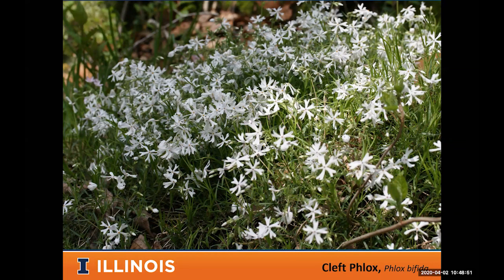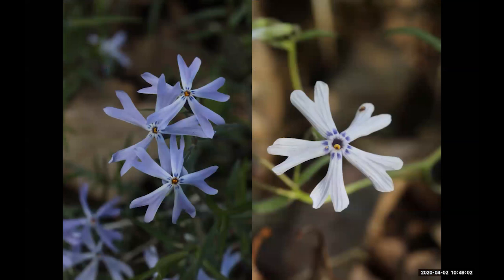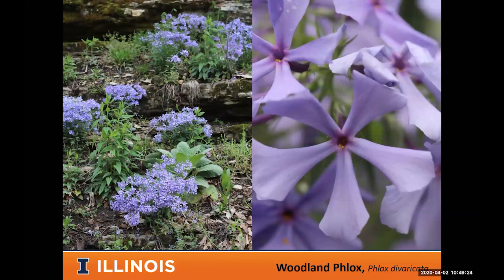We have a couple of phloxes to mention. Cleft phlox can grow in uplands and even some dry sites — if not flowering, many people mistake it for grass because of its grass-like leaves. When flowering, look for the deep cleft at the end of the five petals; it ranges from white to dark blue. Common woodland phlox grows in more moist sites, is overall bigger with larger leaves, and is taller than cleft phlox. There are several other phloxes blooming later in spring, but these are the common ones at wildflower sites.